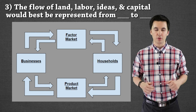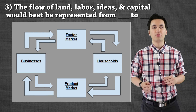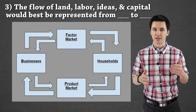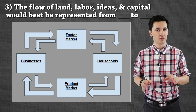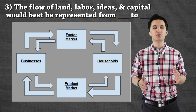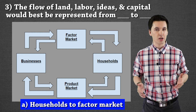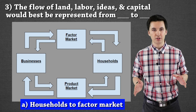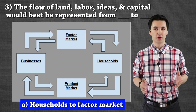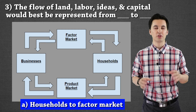Question three is a little different from our first two but still pretty similar. We have to figure out the flow of land, labor, ideas, and capital — where would that be best represented? If you said from households to the factor market, you are correct. When we're talking about land, labor, and ideas, these are factors of production. This is going into the factor market where people work. A factor market is where things get turned into final goods — this is the production stage of the economy. That's important to remember.